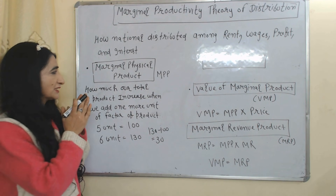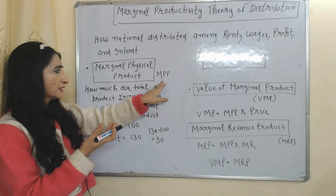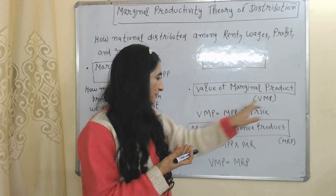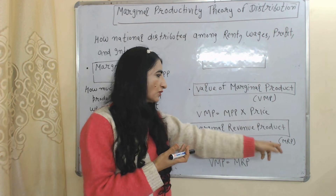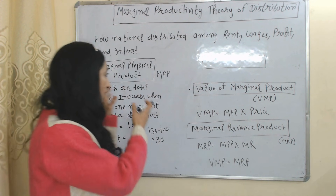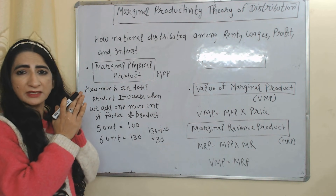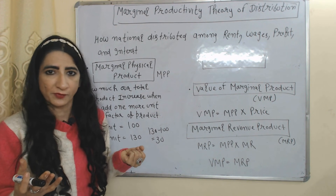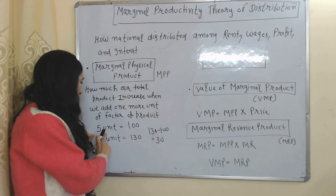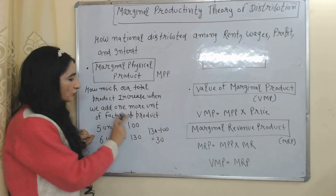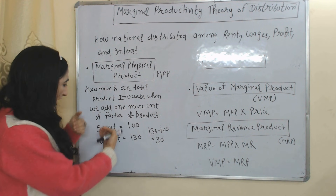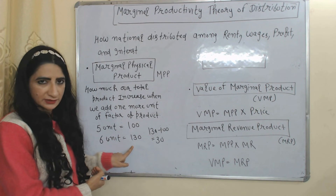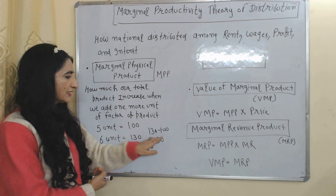There are three main concepts of this theory: Marginal Physical Product (MPP), Value of Marginal Product (VMP), and Marginal Revenue Product (MRP). Marginal Physical Product mainly tells us how much your total product increases when we add one more unit of input. For example, five units of production are giving output equal to 100, and when we add one more unit, output increases from 100 to 130.